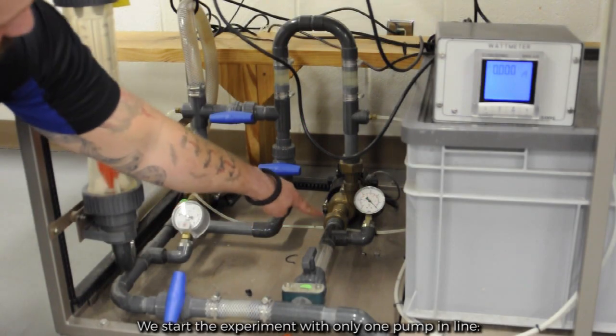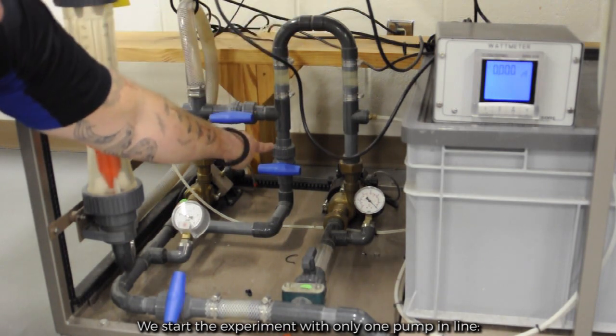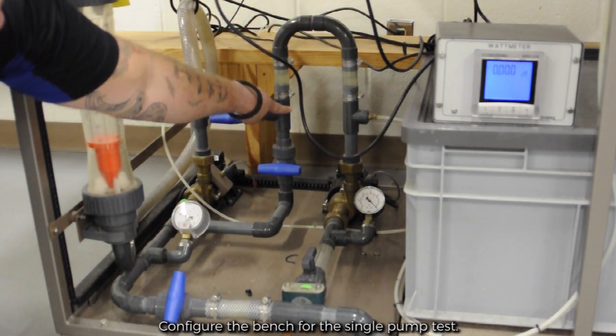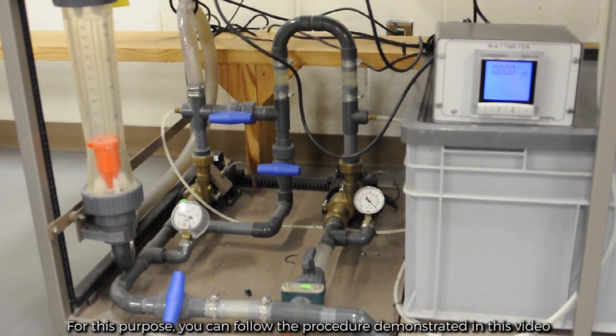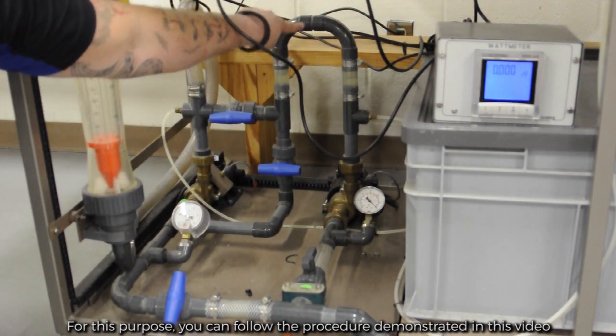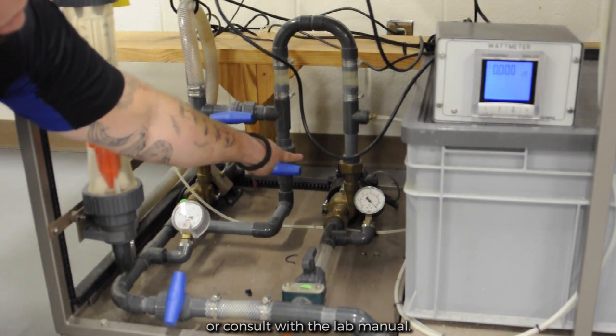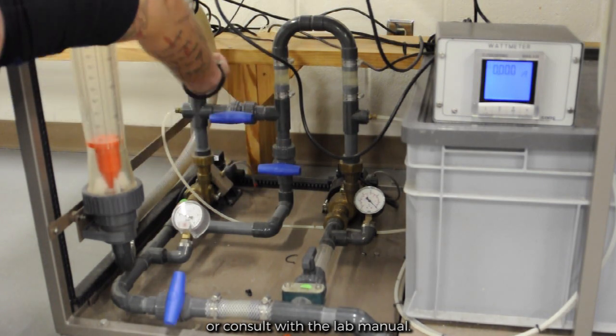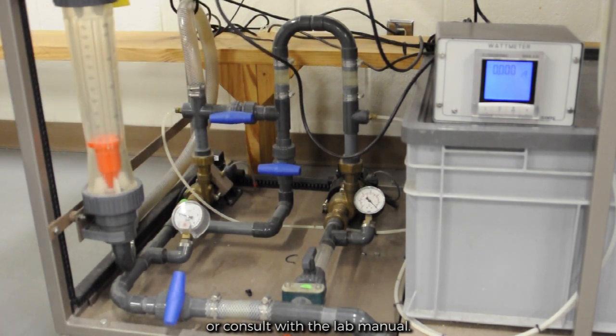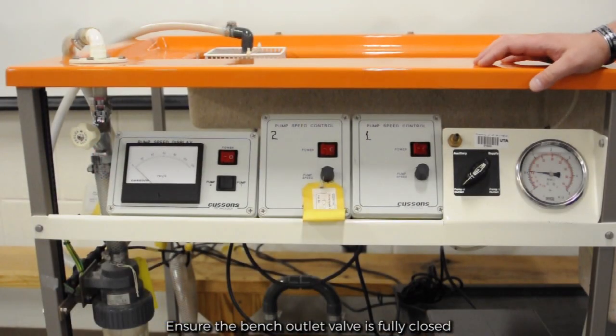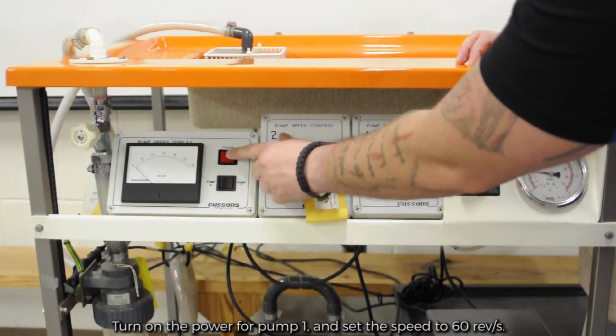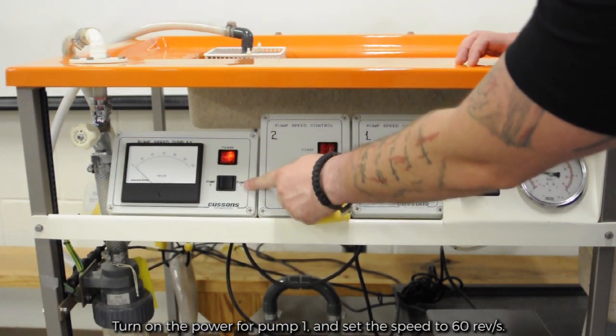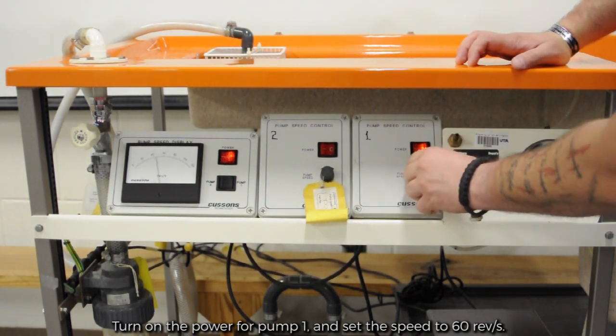We start the experiment with only one pump in line. Configure the bench for the single pump test. For this purpose, you can follow the procedure demonstrated in this video or consult with the lab manual. Ensure the bench outlet valve is fully closed. Turn on the power for pump one and set the speed to 60 revolutions per second.